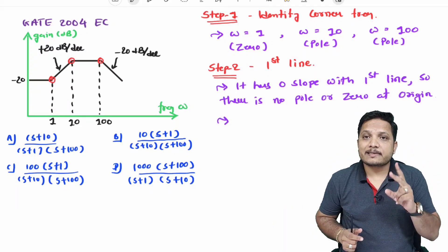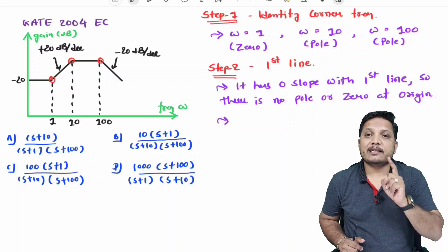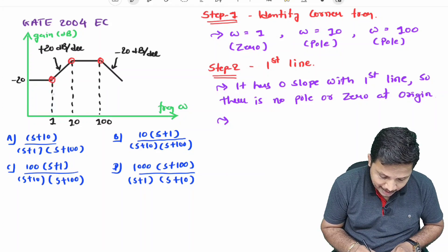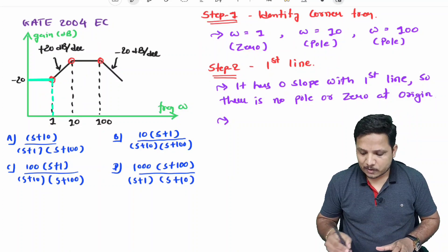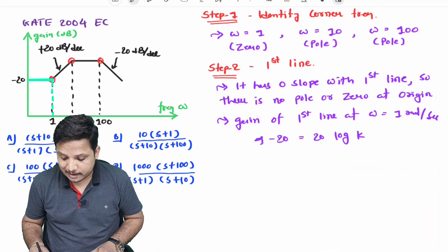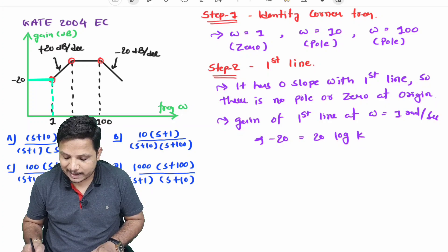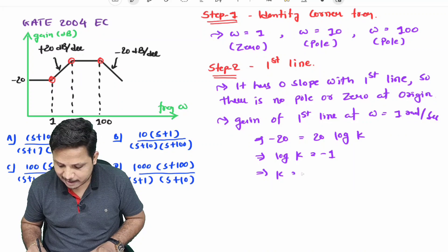The second thing to observe with the first line is the gain at ω = 1 radian per second. If you observe here, with the first line, the gain at ω = 1 radian per second is minus 20 dB. Based on that, we can identify the constant value K of the transfer function. Since minus 20 equals 20·log(K), we get log(K) = −1, which means K = 0.1.